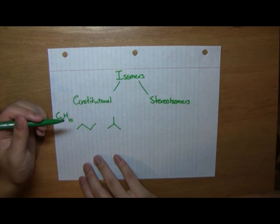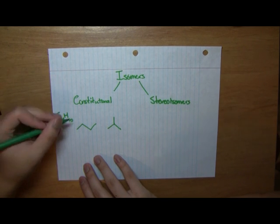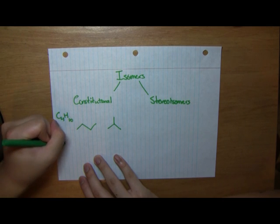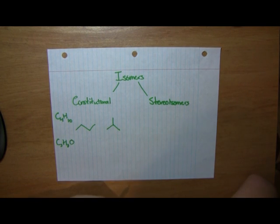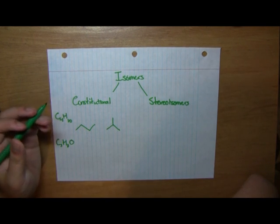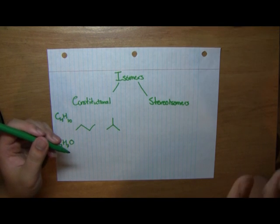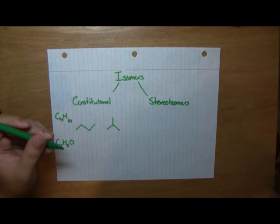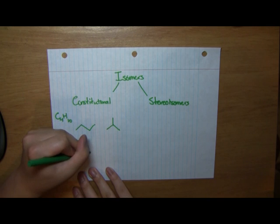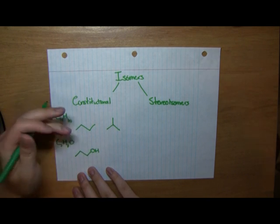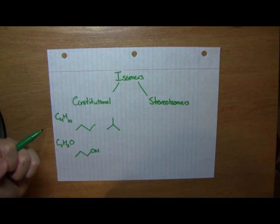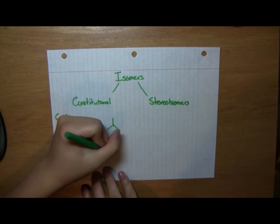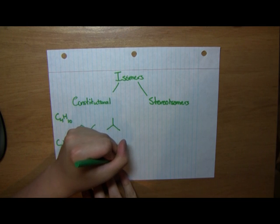Now let's give another example. Let's start with the molecular formula C3H8O. So what are some different molecules we can draw from this formula? Well, we can draw an alcohol, meaning a carbon chain with an OH group branching off of it, like so. But we can also draw something known as an ether, meaning 2 carbon chains which are connected by 1 oxygen between them, like so.